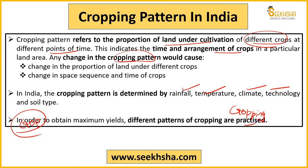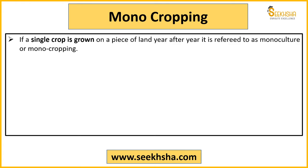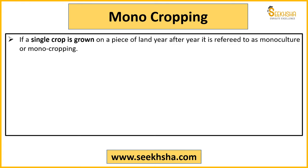There are mainly two types of cropping patterns. One is called monocropping and the other is multiple cropping. Monocropping you can simply understand as single cropping — basically the whole piece of land is used to grow a single crop, such as rice or wheat. This is monoculture or monocropping.